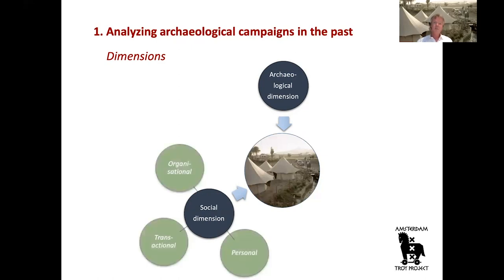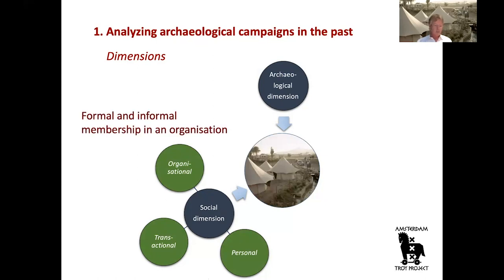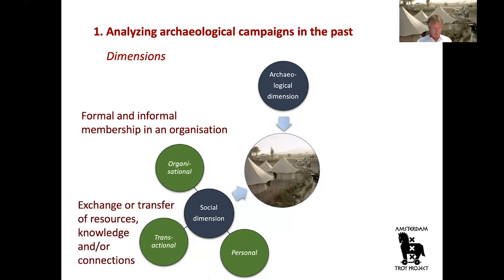The social dimension itself can again be divided into three sections. The organizational section incorporates the formal and informal memberships in organizations. The transactional section includes the exchange or transfer of resources, knowledge and connections, such as sponsorships, fundings, training and logistical assistance. The last section of the social dimension is the personal one, and the personal category deals with friendships or familial relationships.